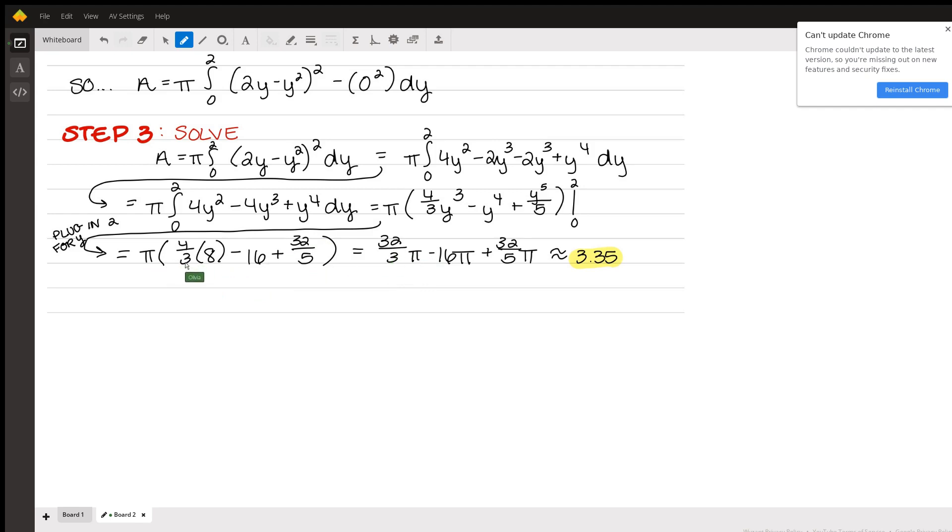And once you distribute your pi to everything, you are going to end up with 3.35 as your area of the solid rotated area. I hope this helped and I appreciate your view. Thank you.